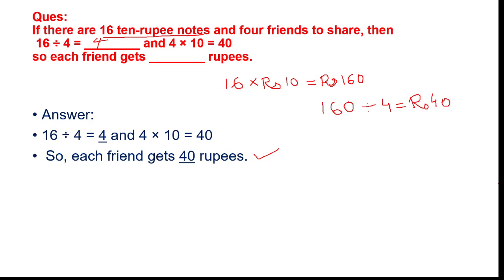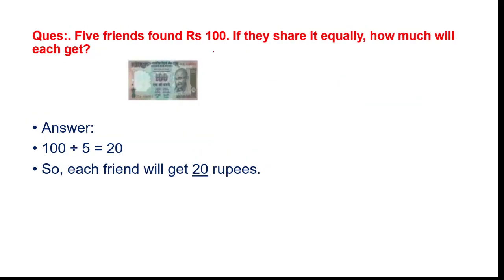Moving to the next page. The same question you can do in different ways. Now: five friends found rupees one hundred. If they share it equally, how much will each get? What you will do is rupees one hundred divided by five, which equals rupees twenty. So each friend will get rupees twenty.